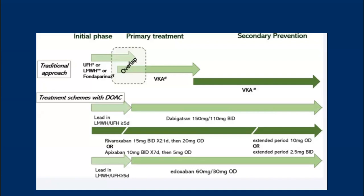Regarding massive and submassive PE: massive PE is high-risk PE — patients with hemodynamic instability. If the patient is in cardiac arrest, has hypotension with systolic blood pressure below 90, or requires vasopressors to maintain systolic above 90, that is massive PE. Submassive PE is when the patient is symptomatic — having the symptoms of PE we described — but there is no hemodynamic instability.